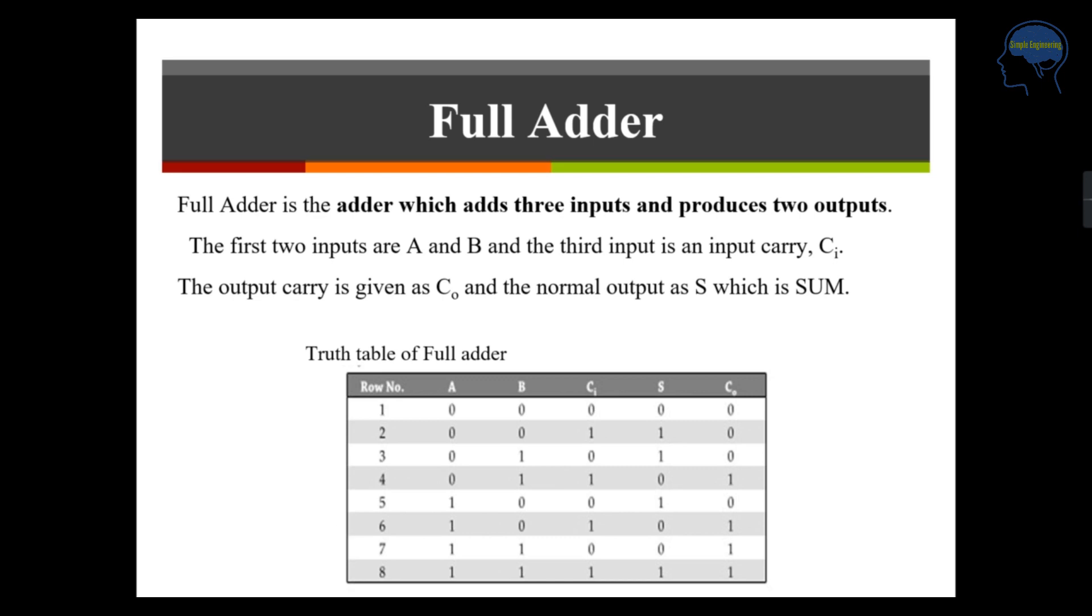We have eight combinations of input which will start from 0 to 1, 1, 1, 7 that is from 0 to 7. Considering all this, your sum 0 plus 0 plus 0 sum will be 0. Next combination is 0 plus 0 plus 1, sum will be 1 and there is no carry. If you consider the third combination 0 plus 1 plus 0, sum is 1 and there is no carry.